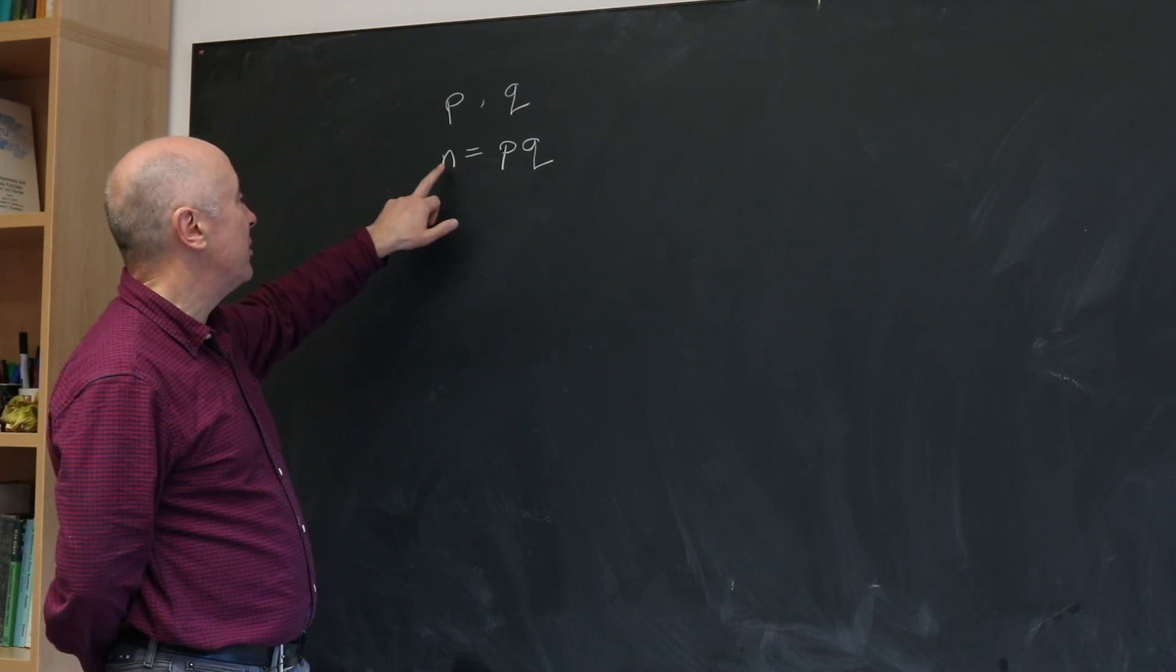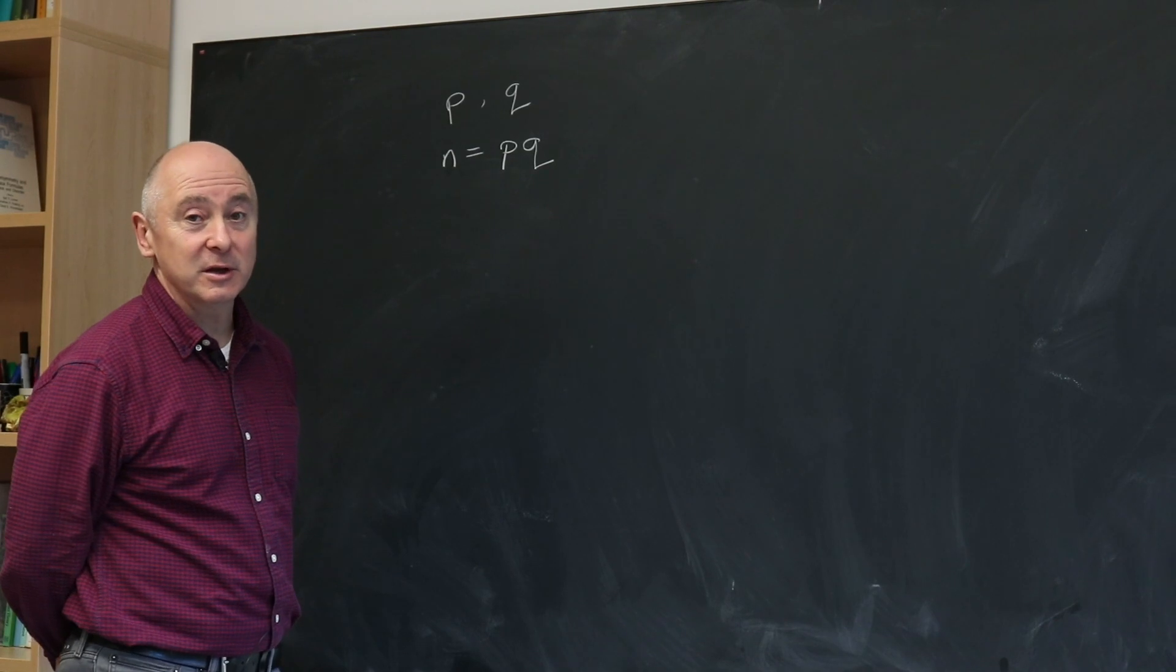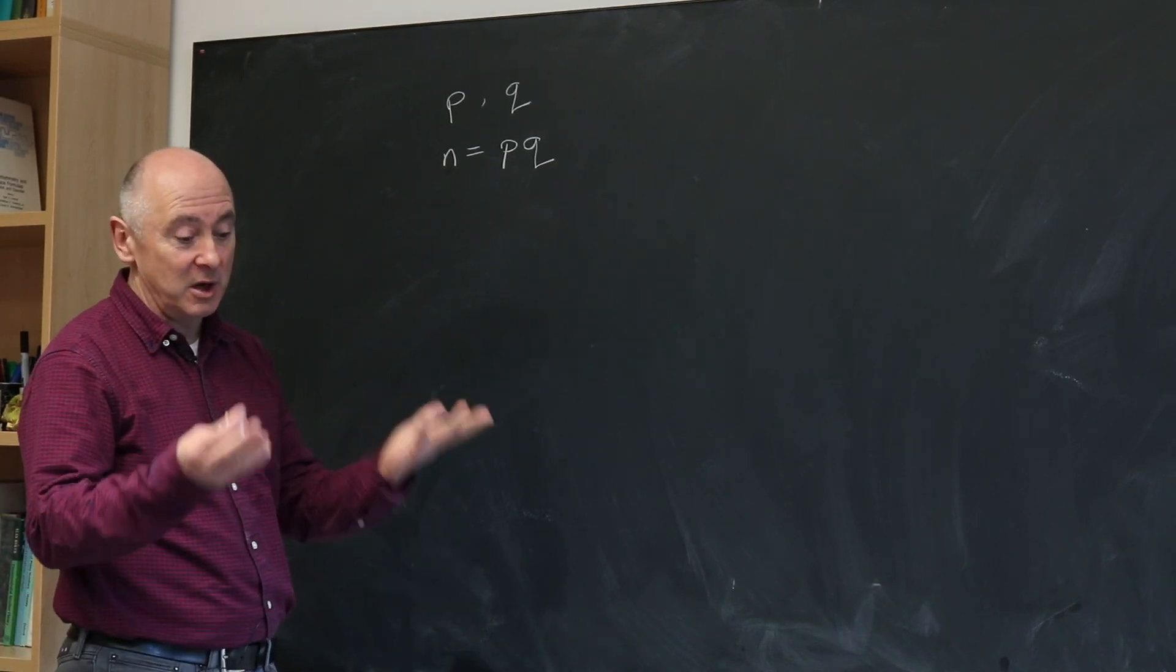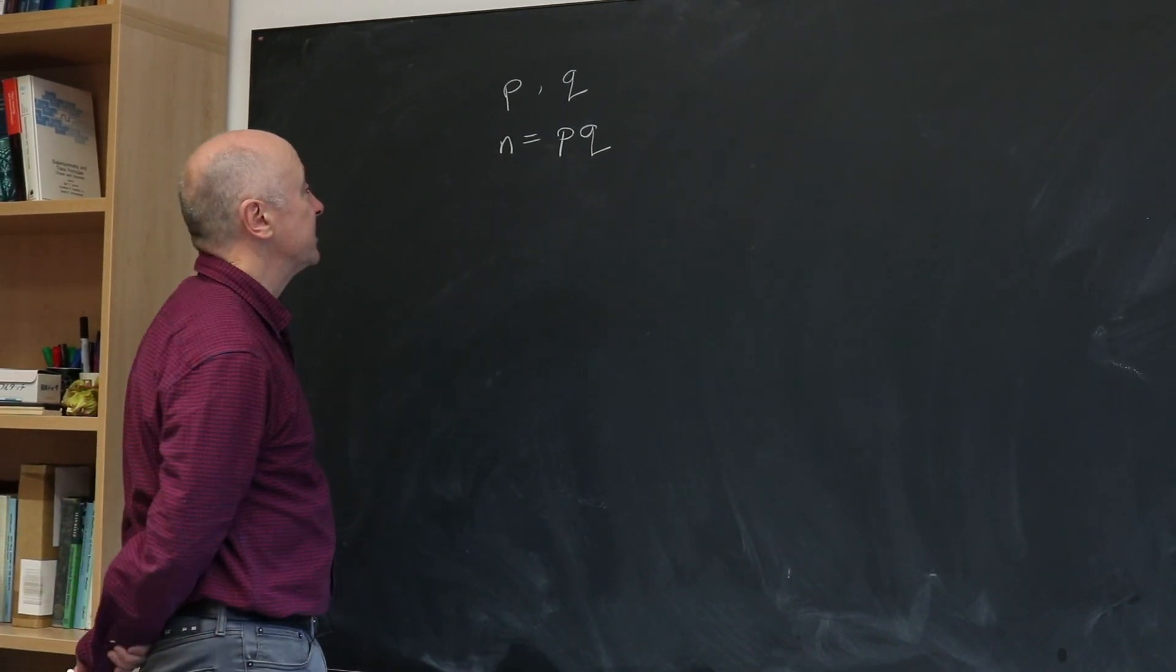It's easy if you know P and Q to find N, you just multiply them together. But if you know N and don't know P and Q, it's exceedingly difficult to find P and Q. It would be a computational task if P and Q are large enough that would take longer than the age of the universe given modern computers.